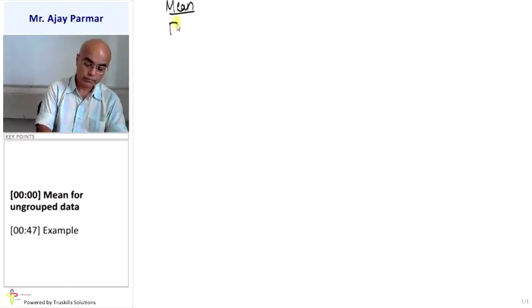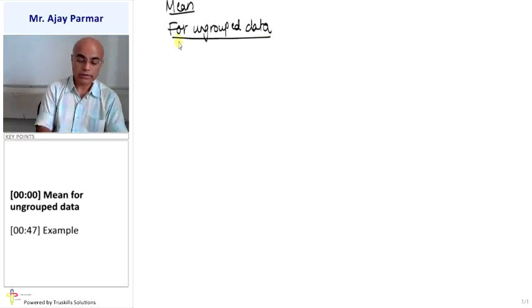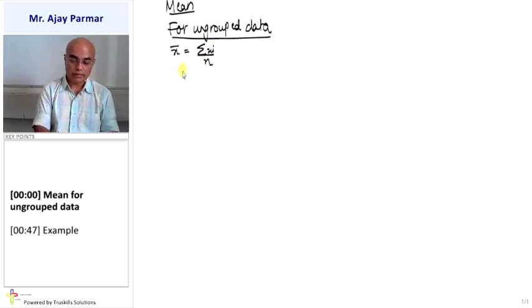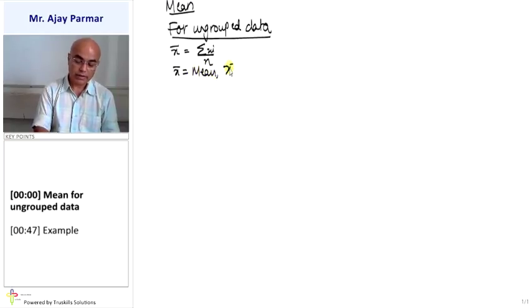For mean for ungrouped data, formula is x bar equals sigma xi upon n, where x bar is mean, xi is observation, and n is number of observations.